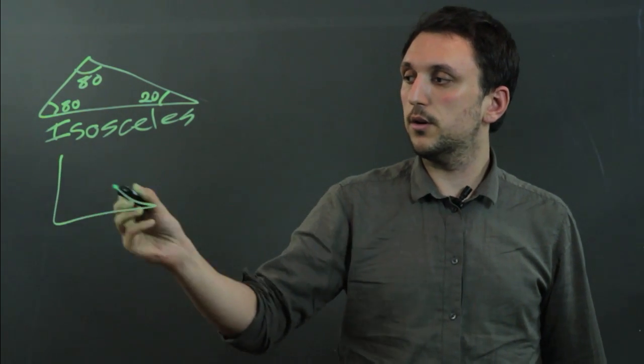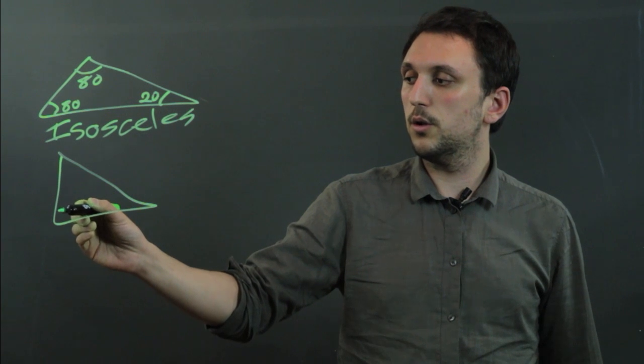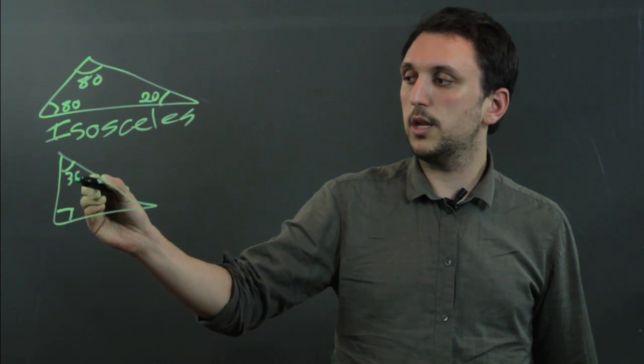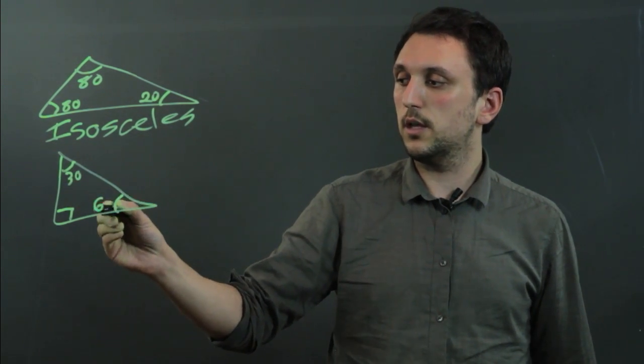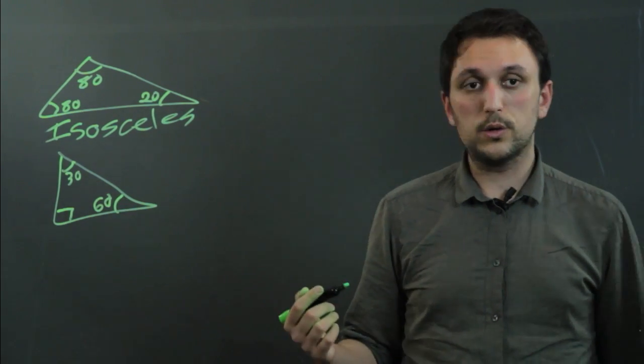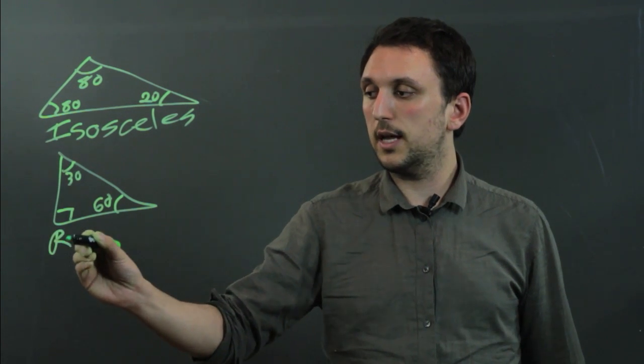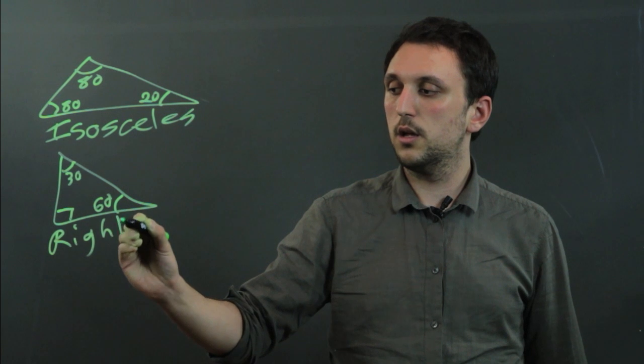Now here's another triangle, and here we can say that this is 90, and this is 30, and this is 60. So again, you can have a student label it, and if they see the right angle, they should say it is a right triangle.